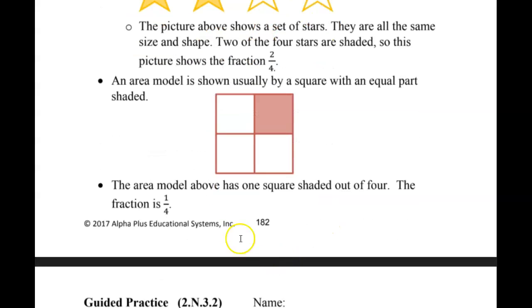Let's look at our square here. An area model, that's what this is called, an area model is shown usually by a square with an equal part shaded. So there's four equal parts here. One is shaded in. The area model above has one square shaded out of four. The fraction is one-fourth.